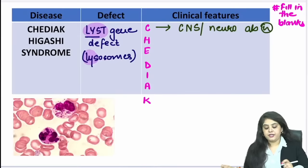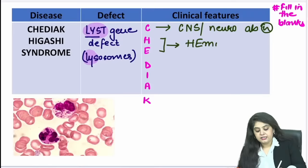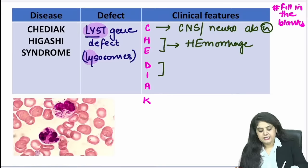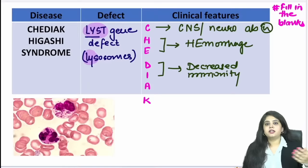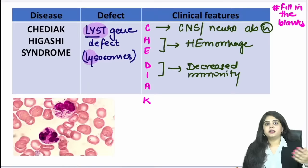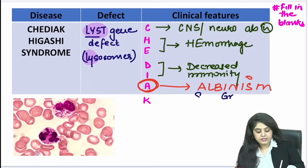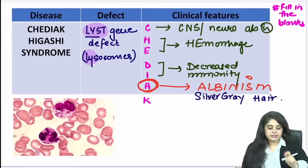The mnemonic for Chediak-Higashi uses the name 'Shediak': CNS/neurological abnormalities (milestones delayed, poor school performance), HEmorrhage (bleeding, nose bleeds, random bleeds from multiple orifices), Decreased Immunity (recurrent infections again and again), and Albinism — pigment problem of hair and skin. These kids have silvery grey hair, which is very characteristic. That is the A in the mnemonic.